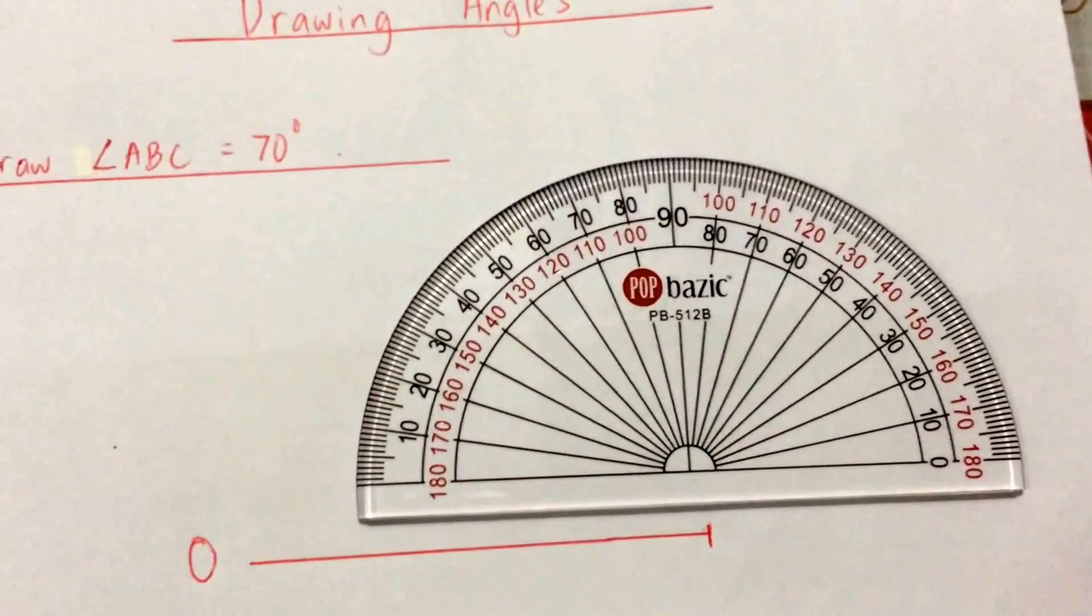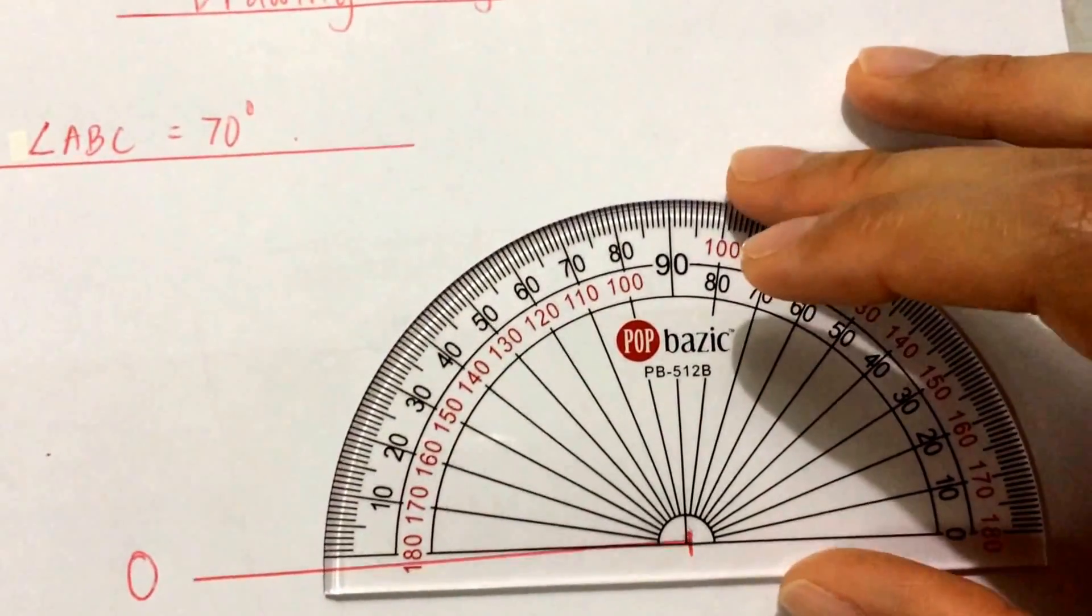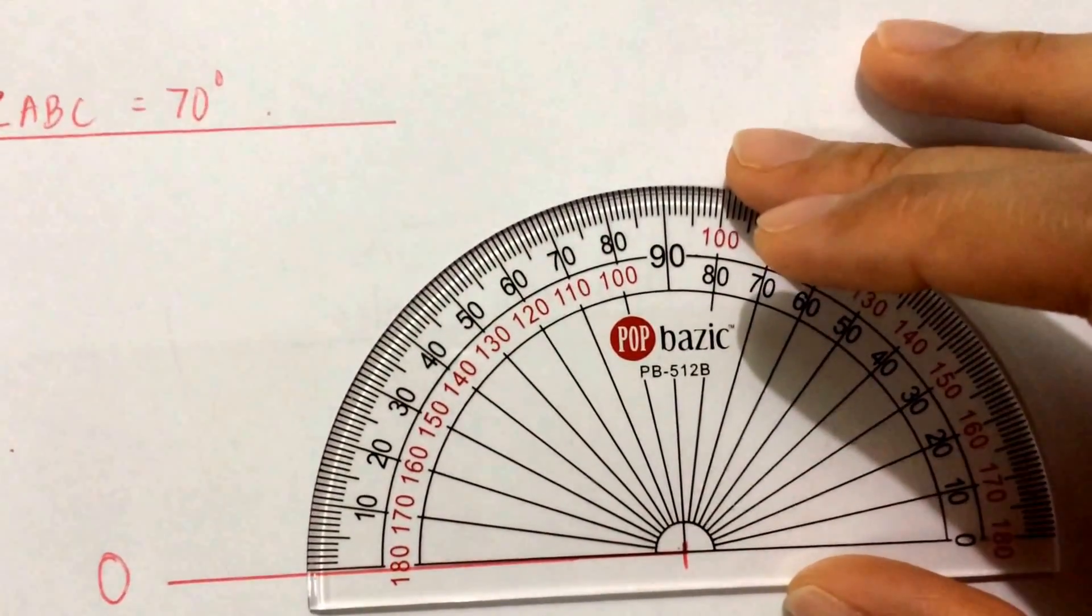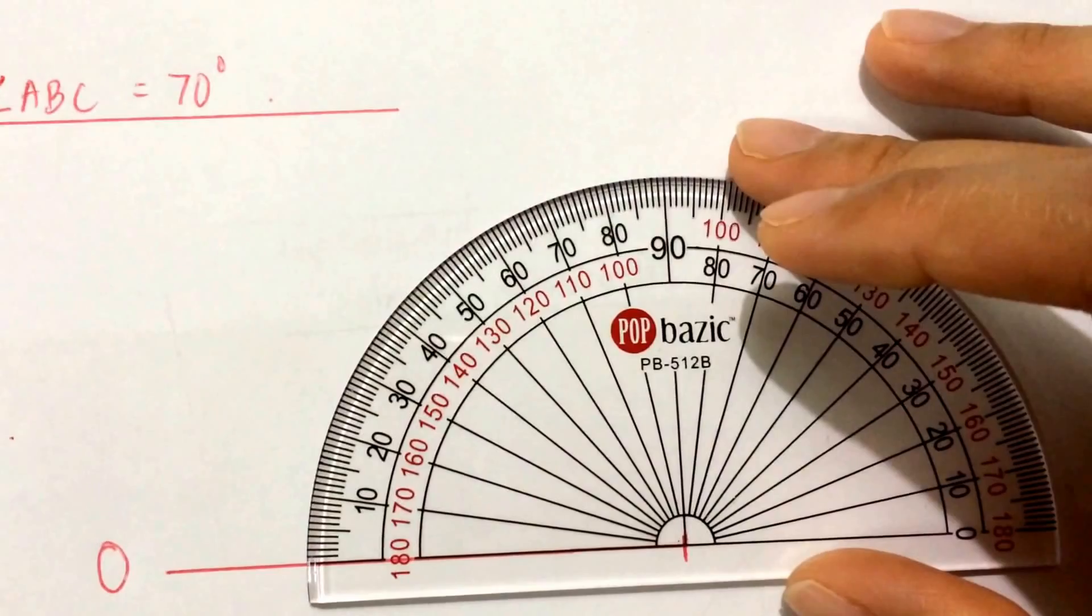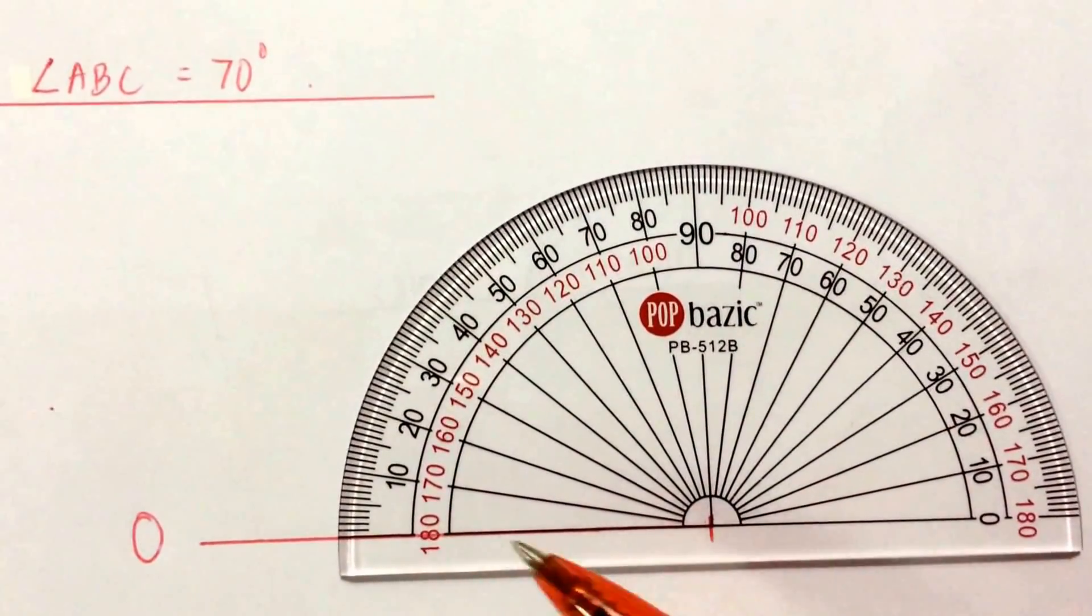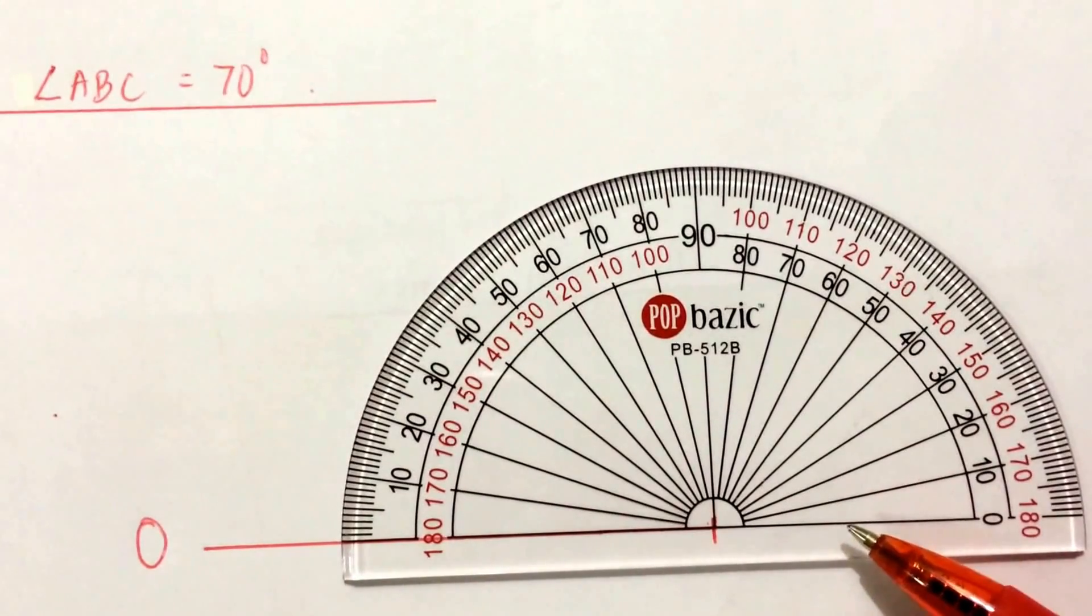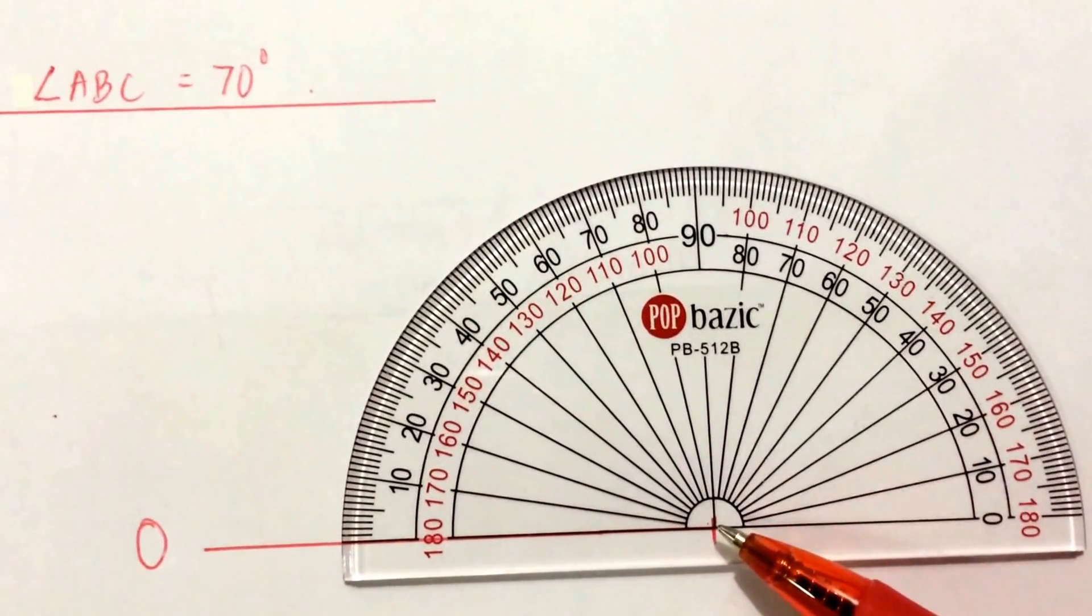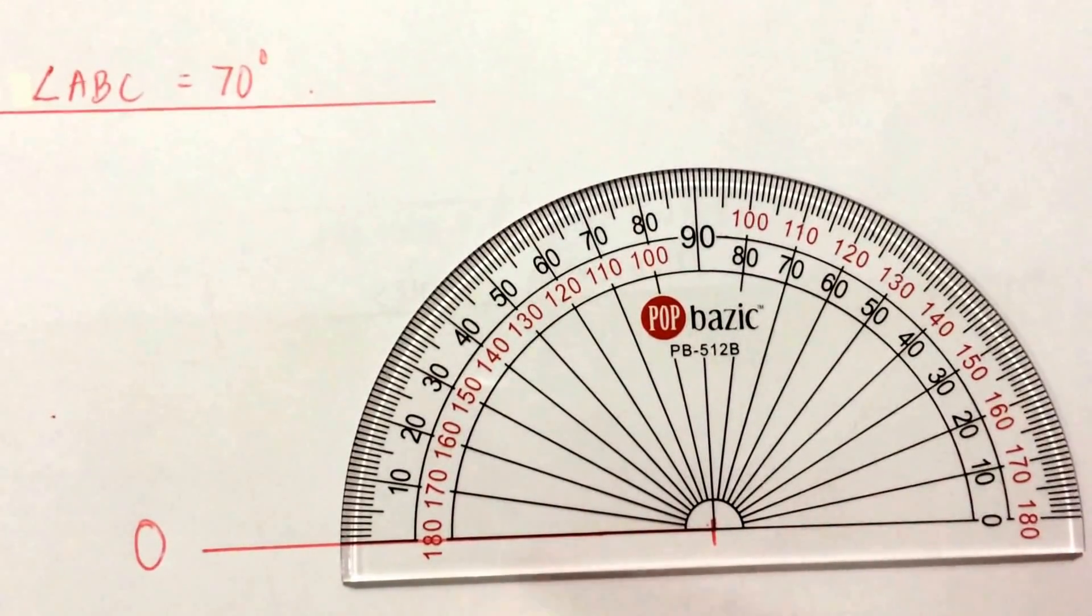So make sure that these two are in line. Okay, now my red line is on the protractor line and this is touching, so I can start drawing my angle now.